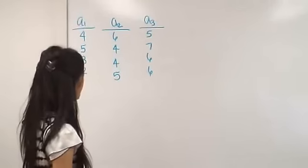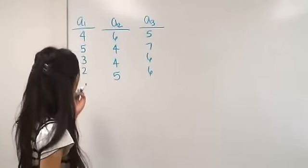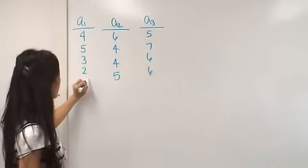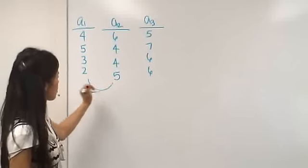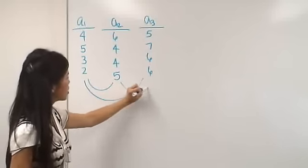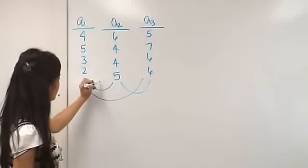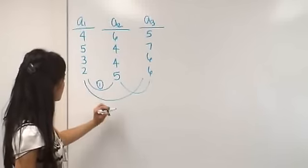So to do planned comparisons, say for example, we could compare any of these, but we're limited to two. So we could compare A1 to A2, or we could do A1 to A3, or we could do A2 to A3. So just as an example, I'm going to do A1 to A2, and I'm going to do A1 to A3.